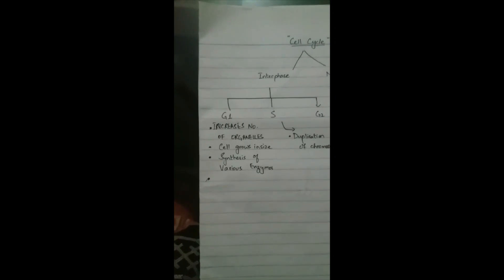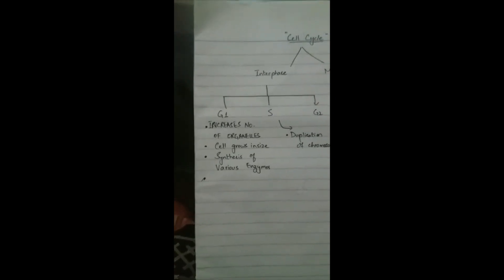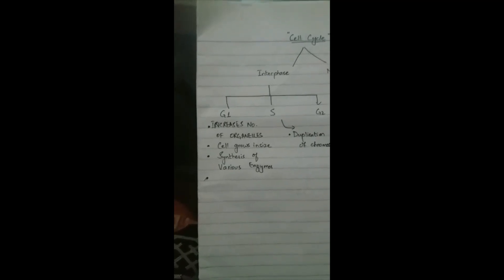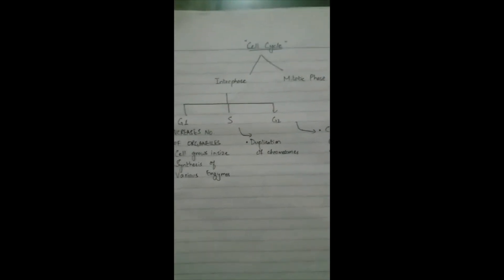Also in G1 phase, there is synthesis of various enzymes which are required in the next phase, which is S phase. In S phase, duplication of chromosomes occurs. In G2 phase, the cell prepares proteins that are essential for mitosis, mainly for the production of spindle fibers.